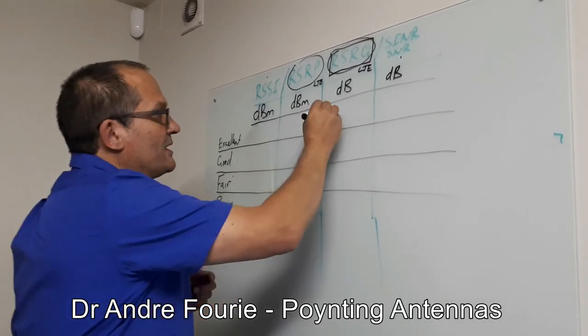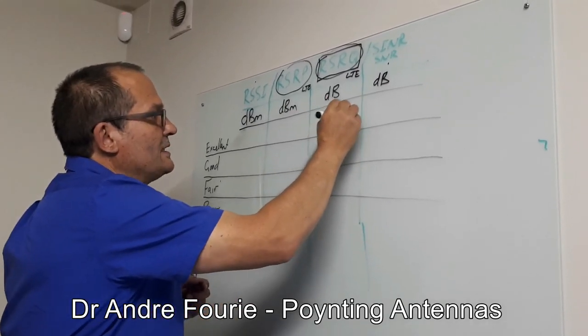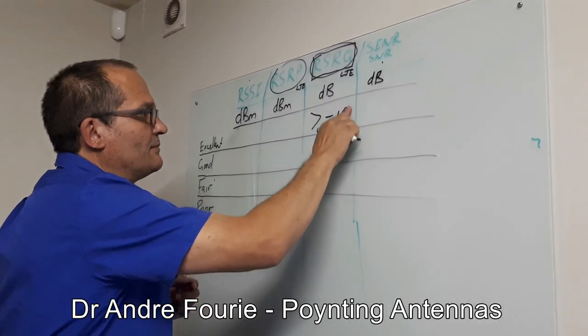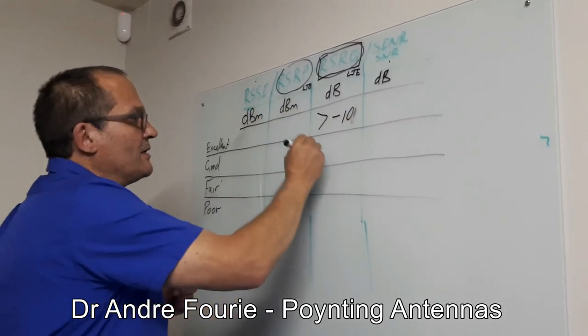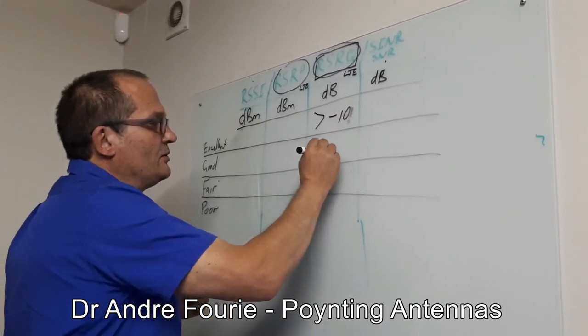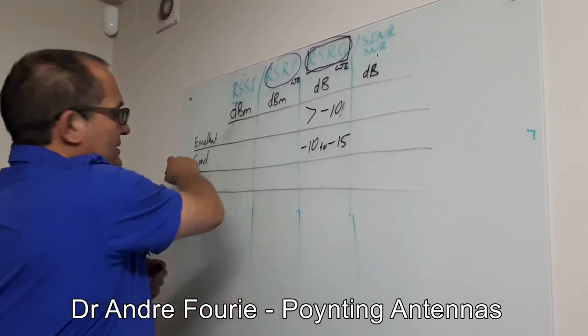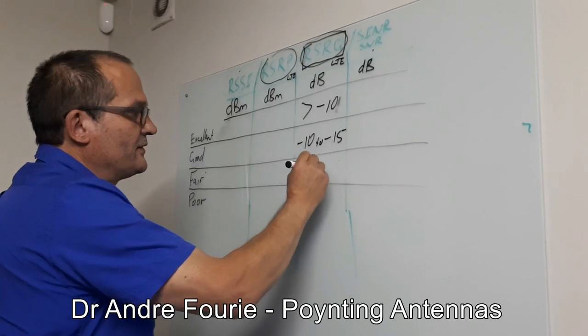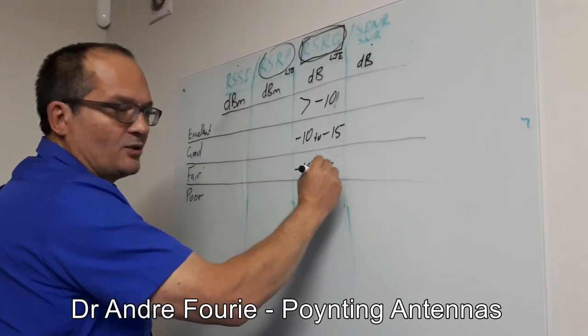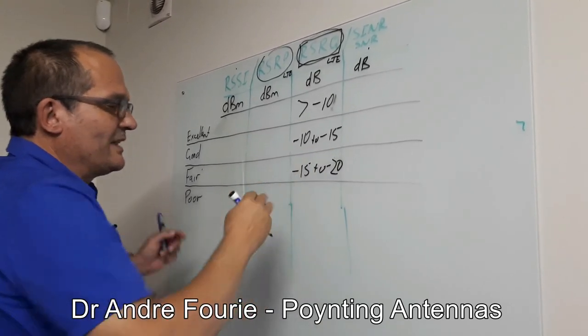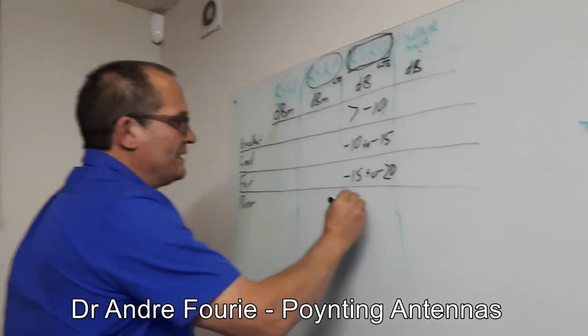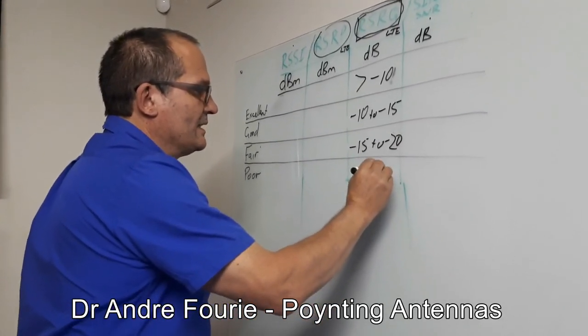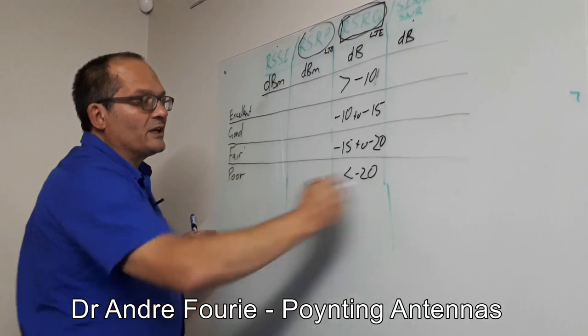A value that's really good is bigger than minus 10. We leave the units out there at the top. Minus 10 to minus 15 is good and should still give you very good performance. 15 to minus 20 is what you should get towards the end of a cell, and then less than minus 20 is really becoming questionable. All relates to your data rate.